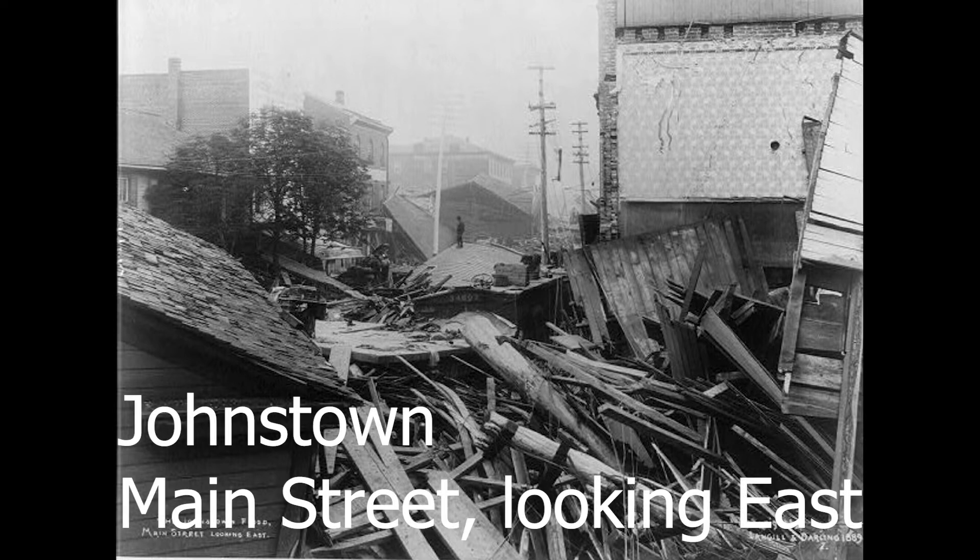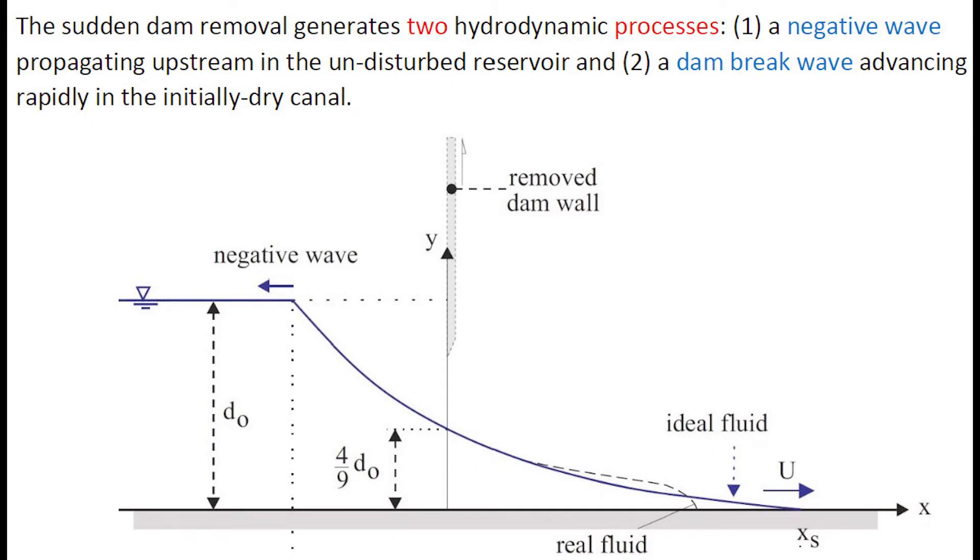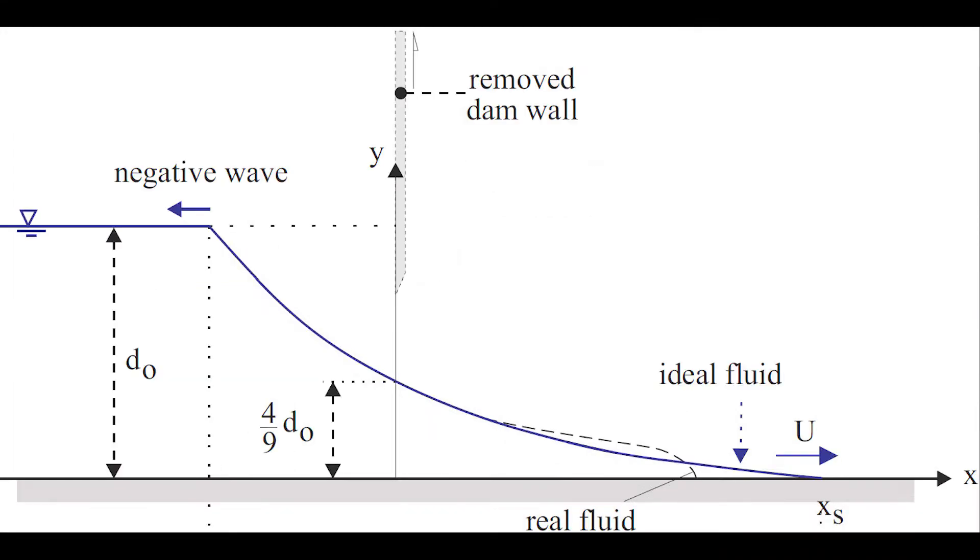This photograph shows a main street looking east following the Johnstown Flood. The sudden dam removal generates two hydrodynamic processes: a negative wave propagating upstream within the undisturbed reservoir, and a dam-break wave advancing rapidly downstream in the initially dry canal.